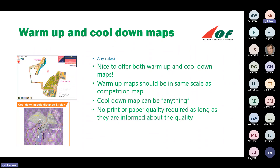I don't think there are any rules about warm-up and cool-down maps, but it's nice to offer both. Warm-up maps should be in the same scale as the competition map, even if that results in a very small paper sheet. The cool-down map can be anything — as shown here from the World Cup this spring, where we used an aerial photo — it's useful for telling runners where to be after the race. There's no print or paper quality required for warm-up and cool-down maps; as long as teams are informed about the quality, it will be okay.